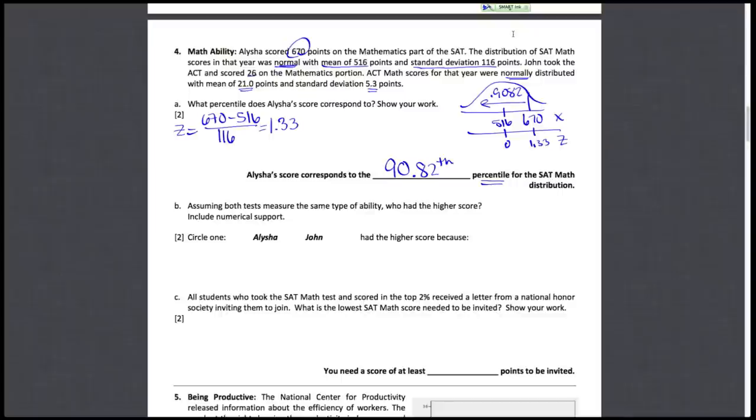Now comparing the two who had really the higher score. We already established that Aisha, I don't want to necessarily circle that right away, but her score was what? 1.33 standard deviations above the mean. That's what her z-score turned out to be.